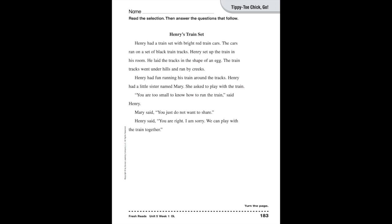Henry's Train Set: Henry had a train set with bright red train cars. The cars ran on a set of black train tracks. Henry set up the train in his room. He laid the tracks in the shape of an egg. The train tracks went under hills and ran by creeks. Henry had fun running his train around the tracks.